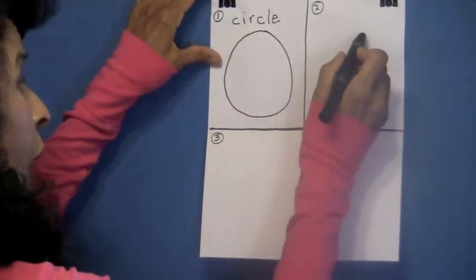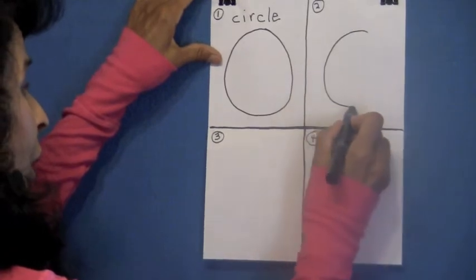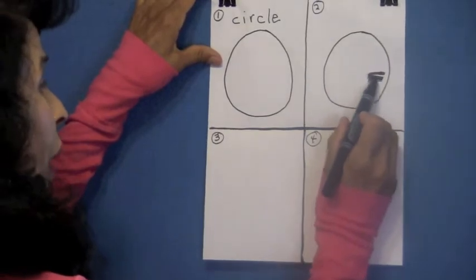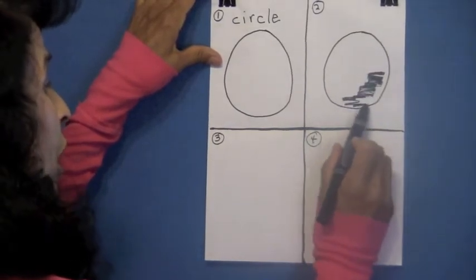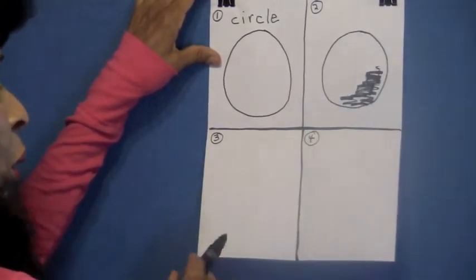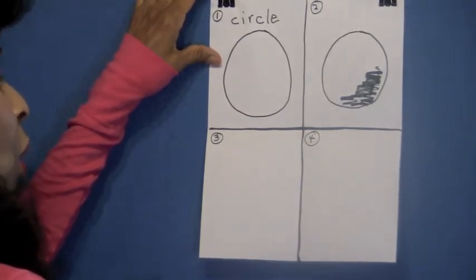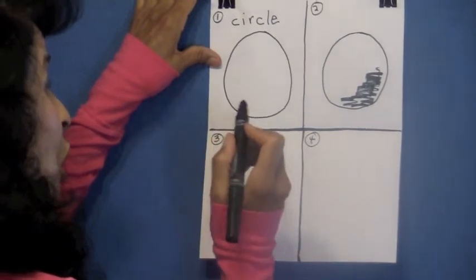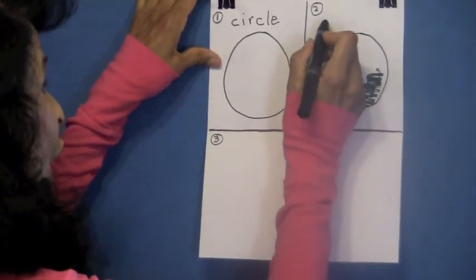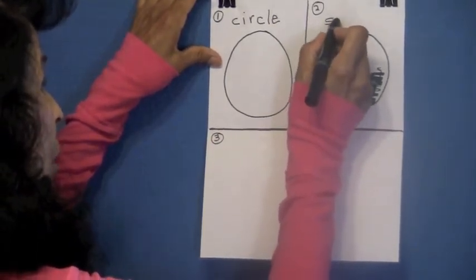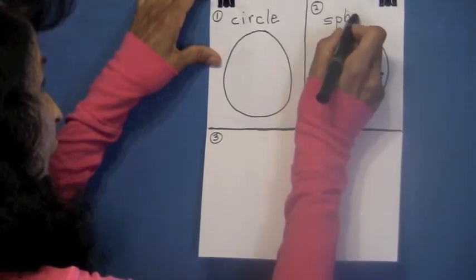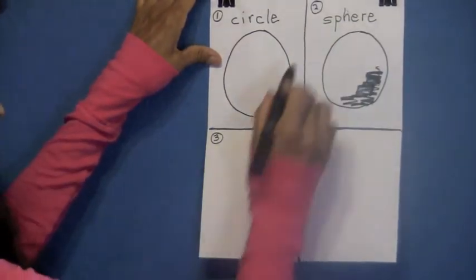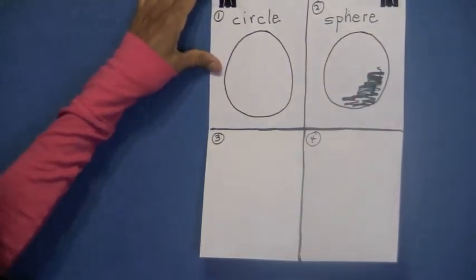Now go to box two. I want you to draw another circle. And in this circle, I want you to shade it right down here. We're going to give this circle some body. And so what do we have now? We have a sphere. Boys and girls, as you write it, I want you to say it with me. S-P-H-E-R-E. And what is this shape? Sphere. Good job.